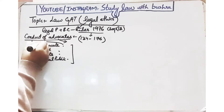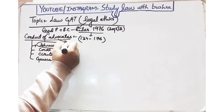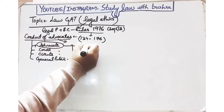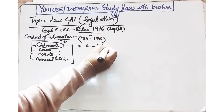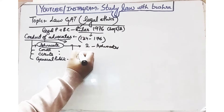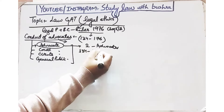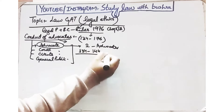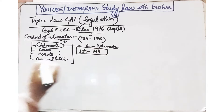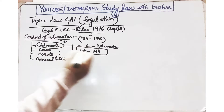Aaj ki is video mein hum ek advocate ka conduct doosre advocate ke saath discuss karenge — ki ek advocate ne doosre advocate ke saath kis tarah se behave karna hai. Rule 134 se rule 144 explain karta hai conduct with regards to other advocates.